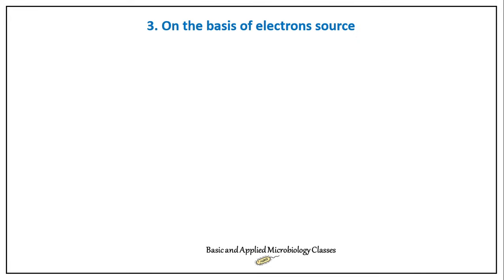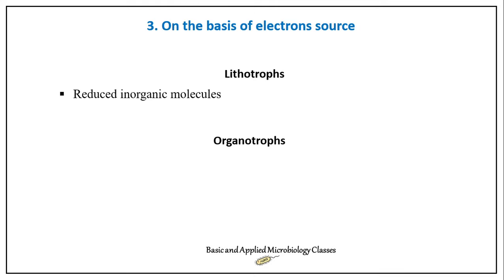Now moving to the third criteria — on the basis of electron source. Lithotrophs are organisms that use inorganic compounds as their electron source. Organotrophs, as the name indicates, use organic molecules as their major electron source. So on the basis of electron source, microorganisms are classified as lithotrophs and organotrophs.